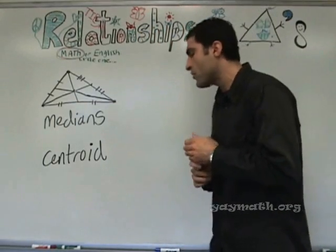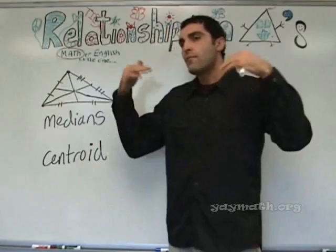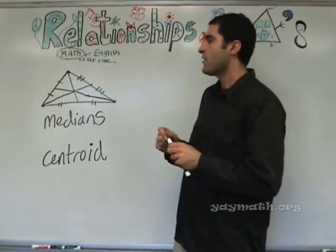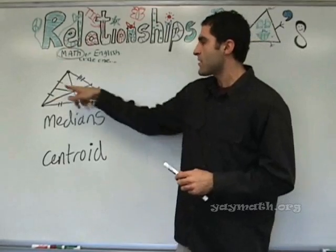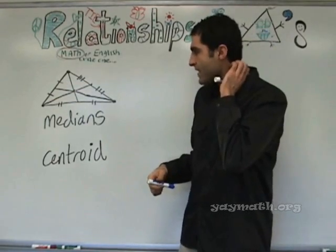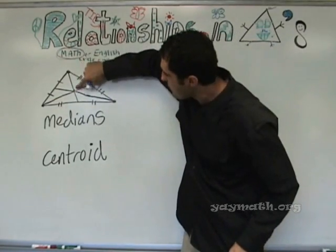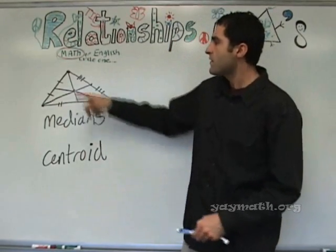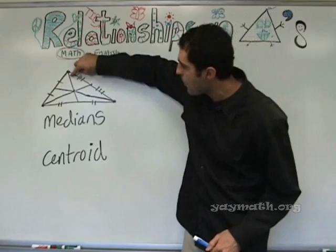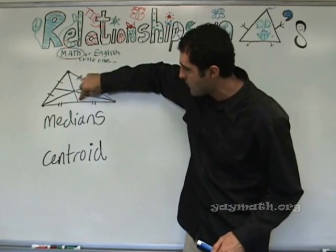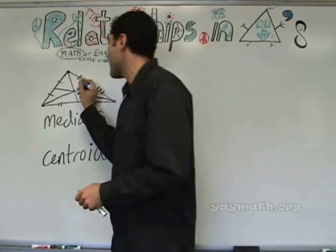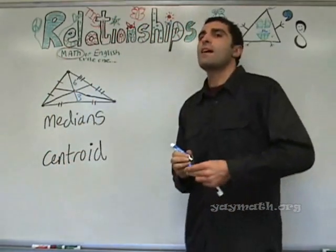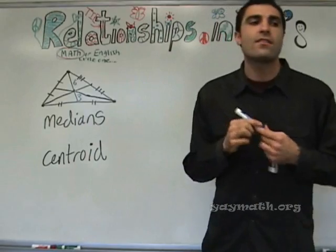For those of you who are interested in more information — I'm not going to hold you to this, but I just want to let you know. The centroid has a very interesting relationship: this part is two-thirds of the line, and this part is one-third of the line. As in, if this was six, this would be three. It has a relationship.